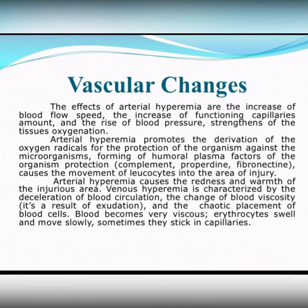Arterial hyperemia promotes the derivation of oxygen radicals for the protection of the organism against microorganisms. Forming of humoral plasma factors of the organism causes the movement of leukocytes into the area of injury. Also, arterial hyperemia causes some local signs — redness and heat.